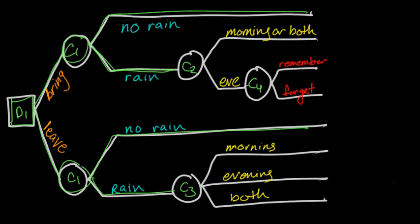If it does rain and we brought our umbrella, we might be concerned with whether it rains all day, in the morning, or just in the evening — because if it rains in the evening, we might be concerned with whether we forget or remember the umbrella. On the other hand, if we leave the umbrella and it rains, we might have different losses depending on whether it rains in the morning, the evening, or all day. This illustrates that these chance nodes don't have to be symmetric — they just have to have some logical, rational representation as we move from left to right.